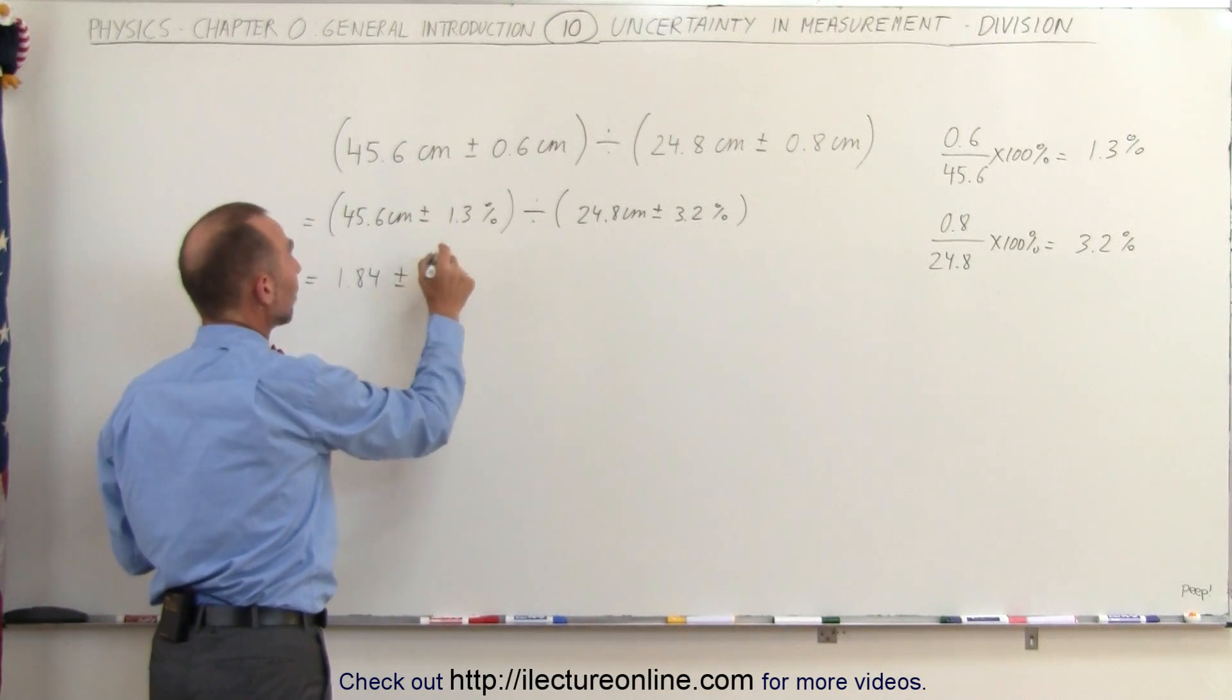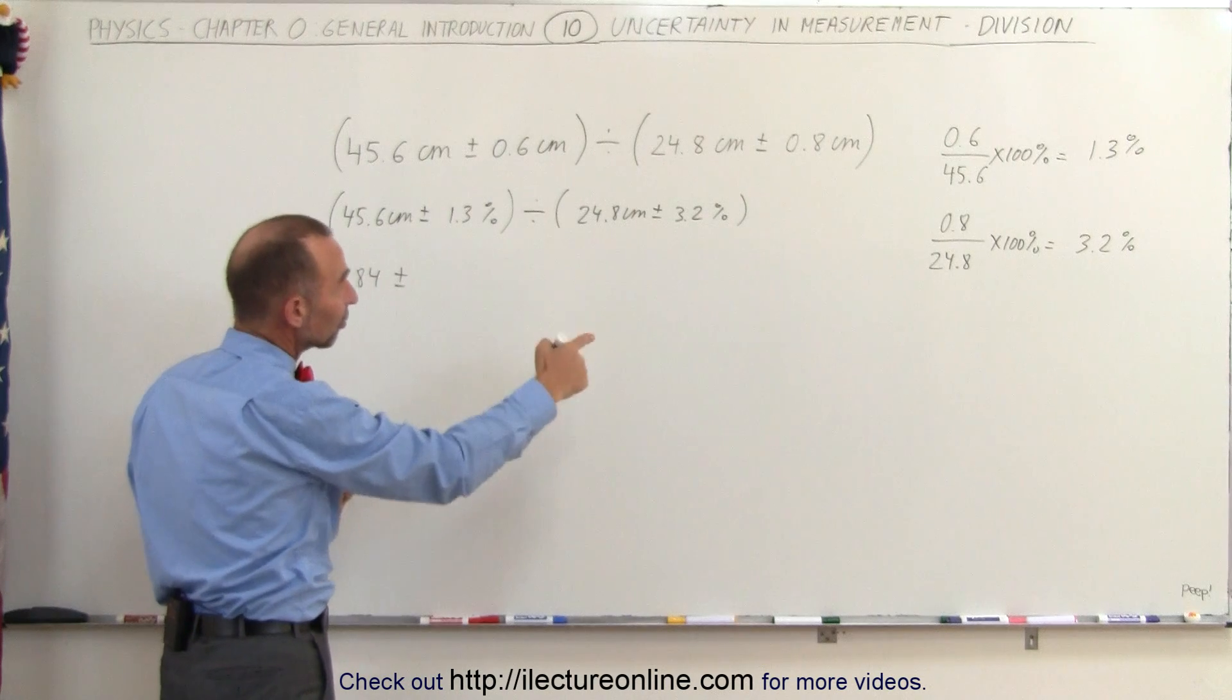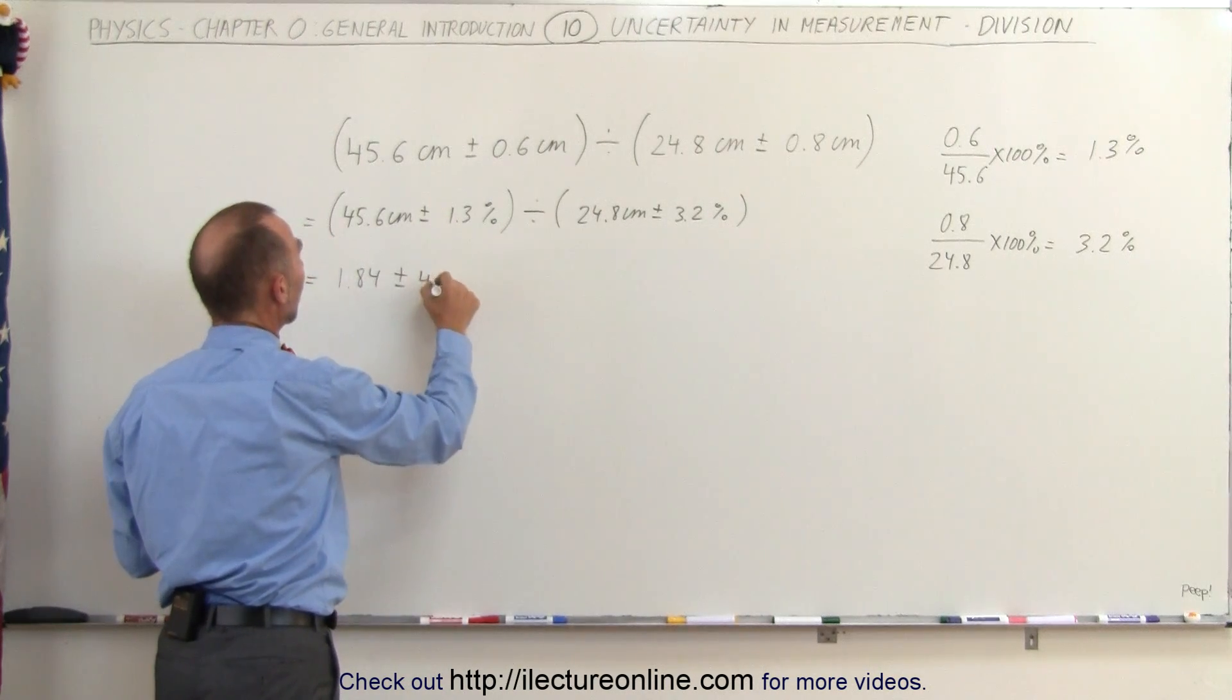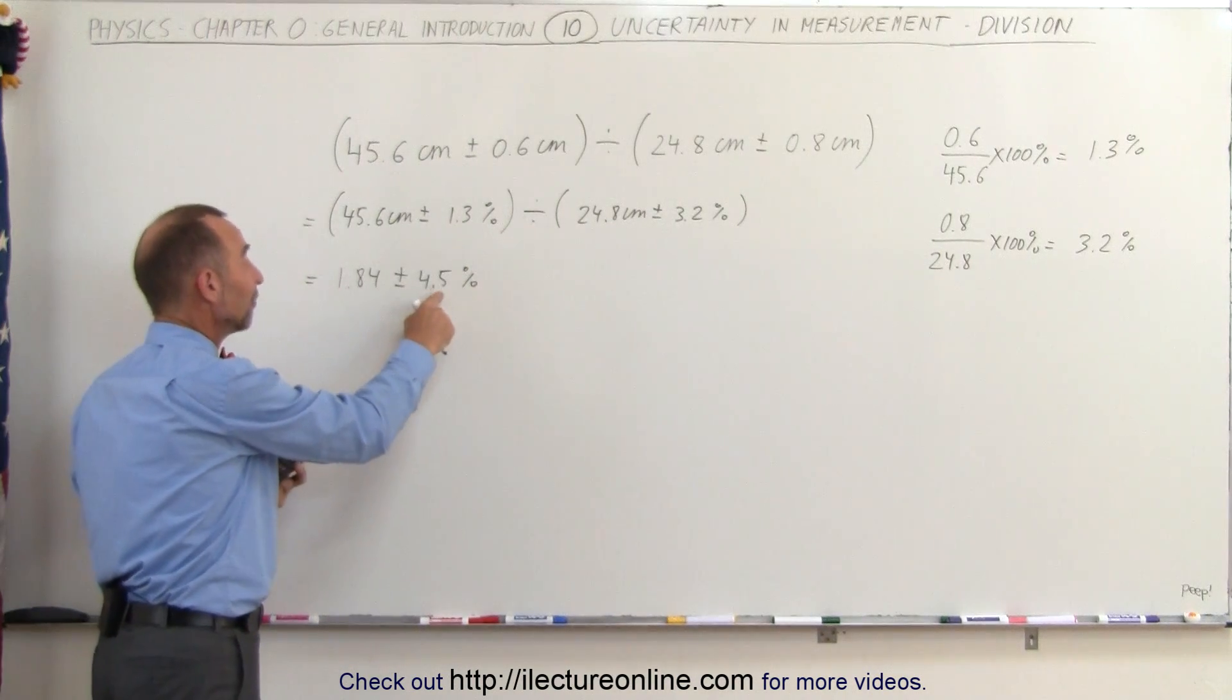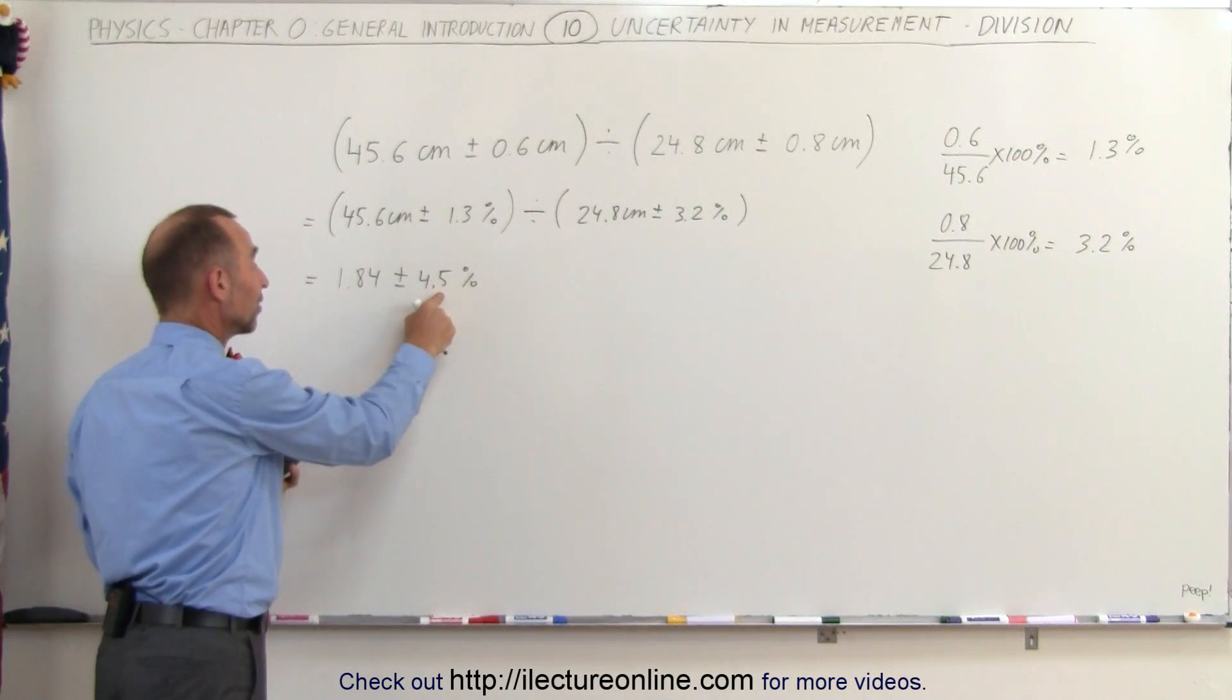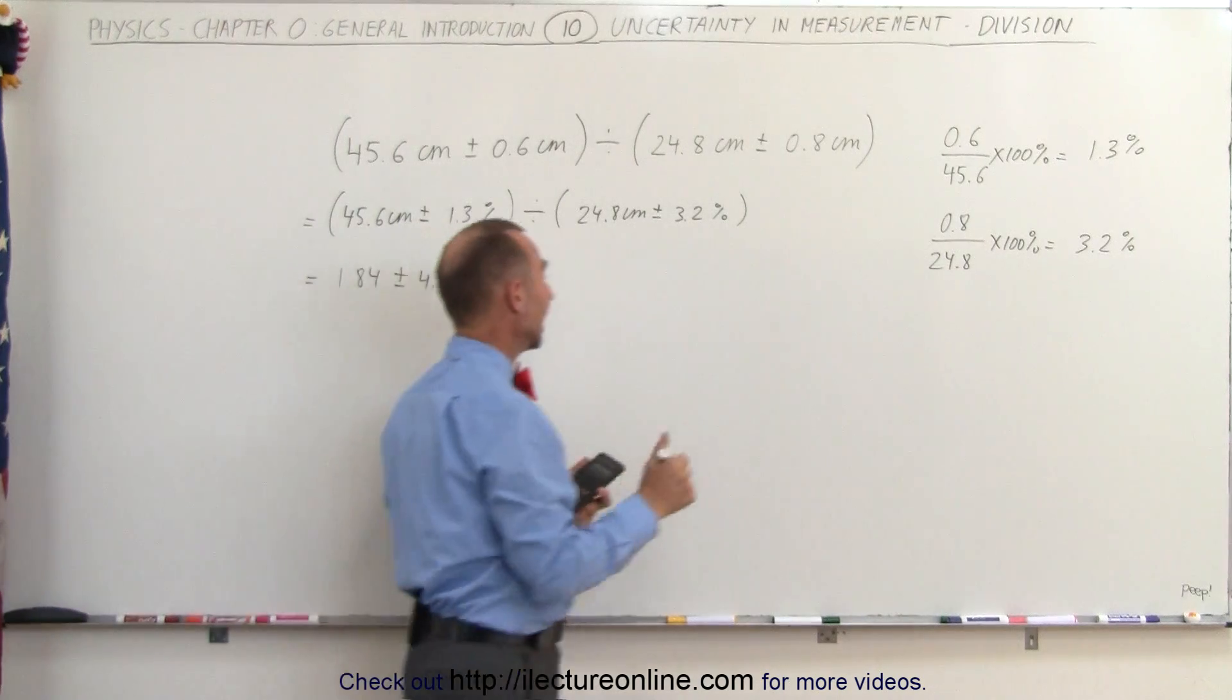And that would be plus or minus 1.3 plus 3.2, that would be 4.5%. And then finally, we then reconvert to a number by figuring out how big 4.5% is of the number 1.84.